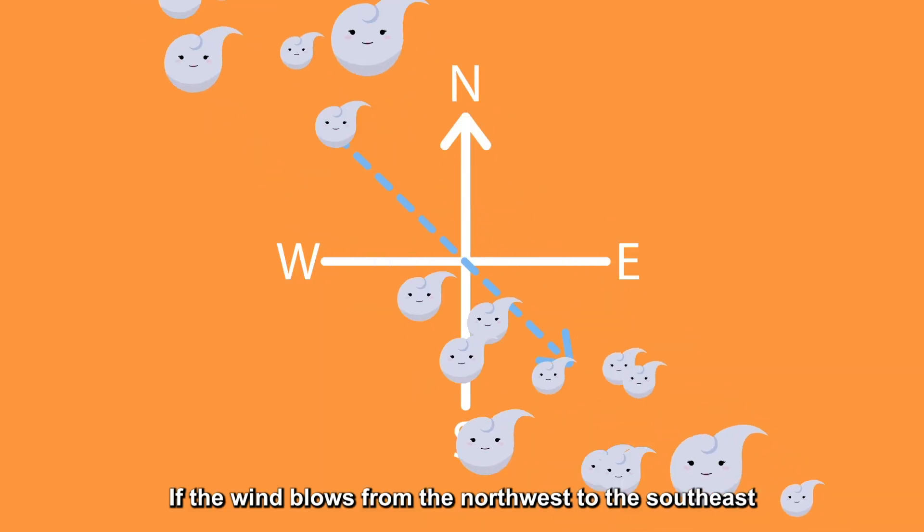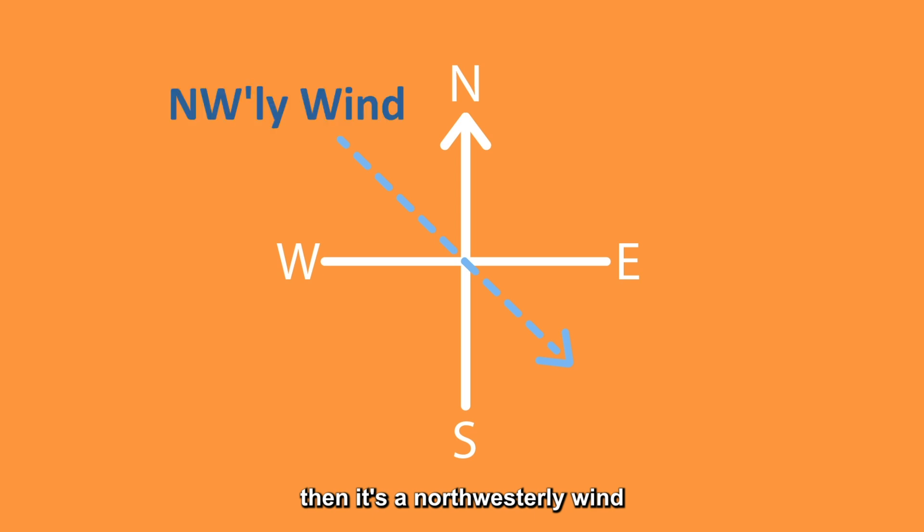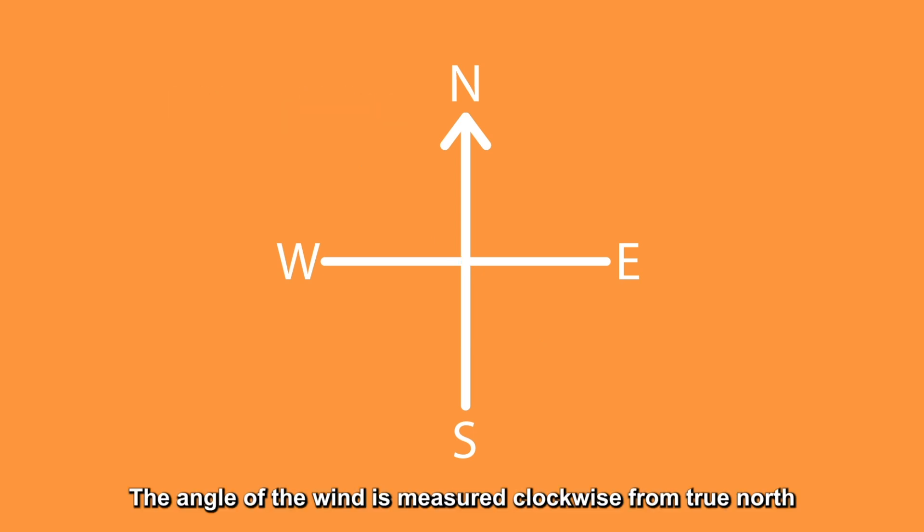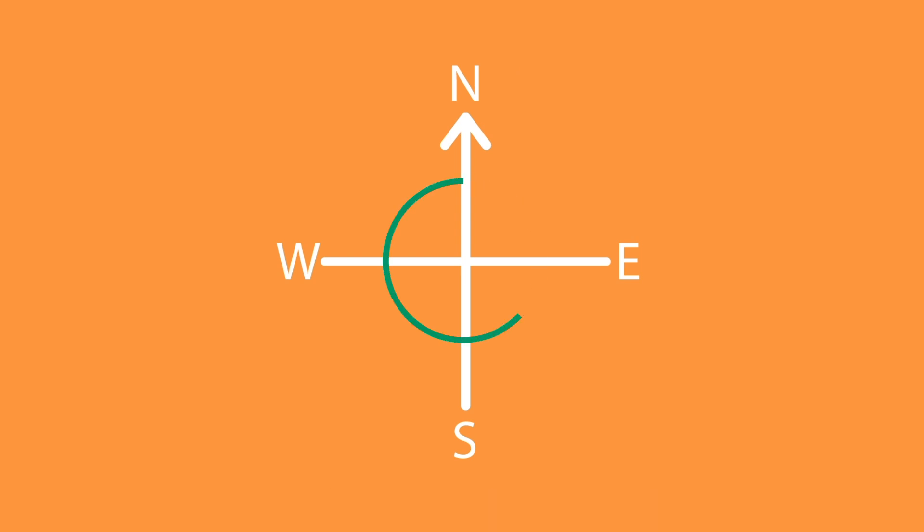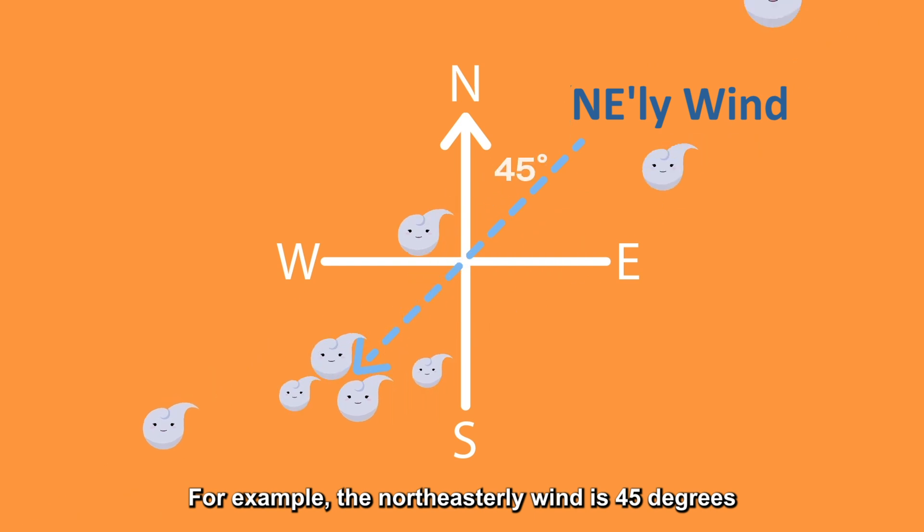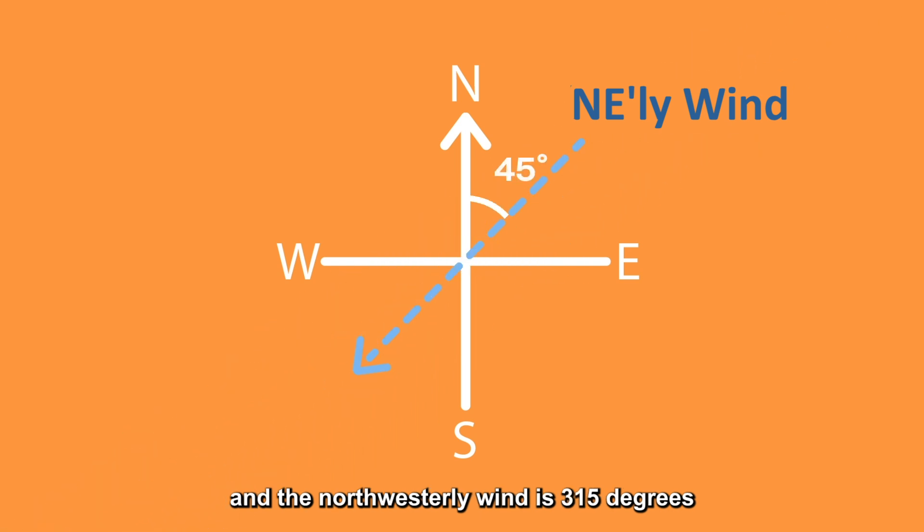If the wind blows from the northwest to the southeast, then it's a northwesterly wind. The angle of the wind is measured clockwise from true north. For example, the northeasterly wind is 45 degrees, and the northwesterly wind is 315 degrees.